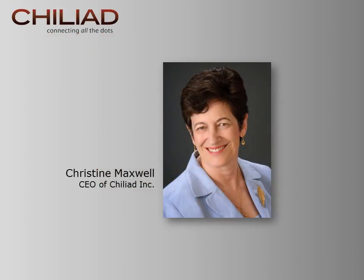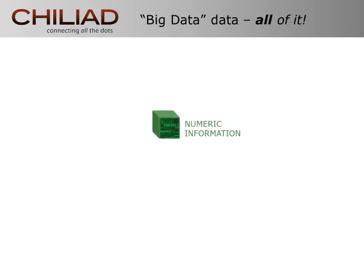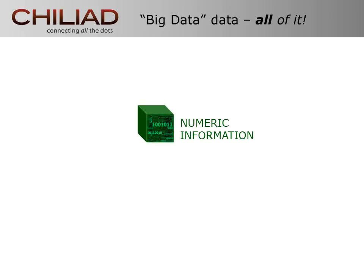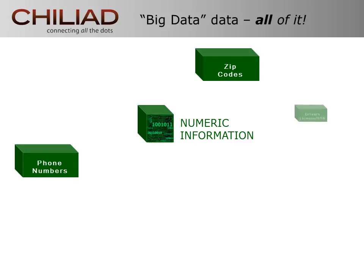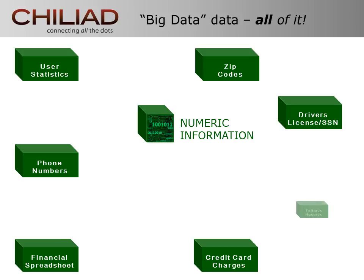Usually, when I talk to people about big data, a very analytic type of data, typically numbers, pops into their head first. This is, in fact, where big data got its start. It was all about numeric information. It was transactional, machine-generated information that was manipulated to find correlations and trends that were meaningful to highly skilled data analysts.